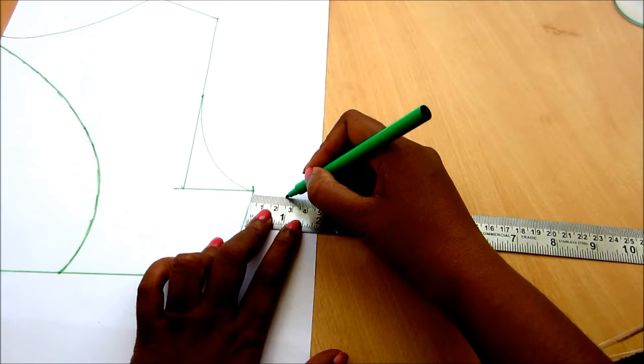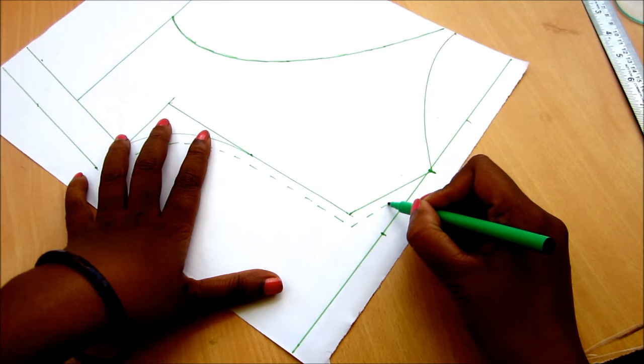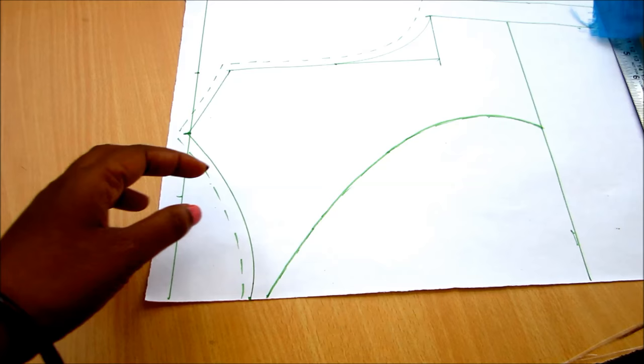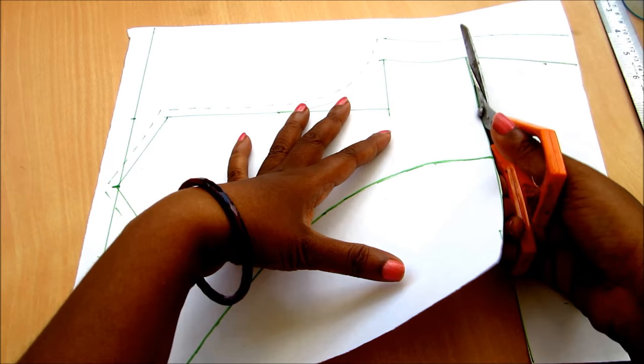You can either increase or decrease the size as per your requirement. Now give the seaming allowances of one inch to its sides, quarter inch towards armhole and the shoulder line, and one centimeter towards the neckline. As I'd be joining the bias to this shape, I'm cutting as is.